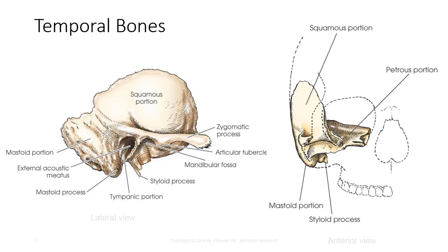The pteromastoid portion articulates with the parietal bone at its superior border and with the occipital bone at its posterior border. This portion usually contains air cells, which vary greatly in size, number, and pneumatization. The mastoid process is a conical process projecting from the mastoid portion, while the petrous portions project medially and anteriorly between the greater wing of the sphenoid and the occipital bone. The petrous portion, also called the petrous pyramid, is conical or pyramidal in shape and is the thickest and densest portion of the cranium, containing the organs of hearing and balance. The temporal bone also contains the auditory ossicles — the bones of the middle ear — which include the malleus, the incus, and the stapes.